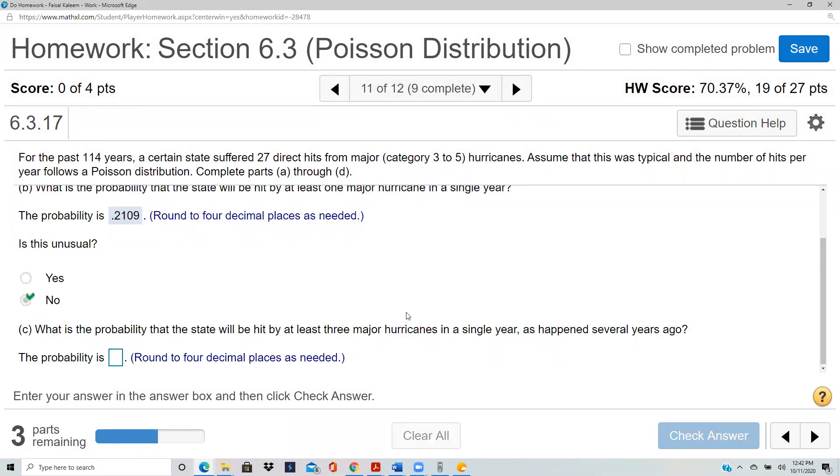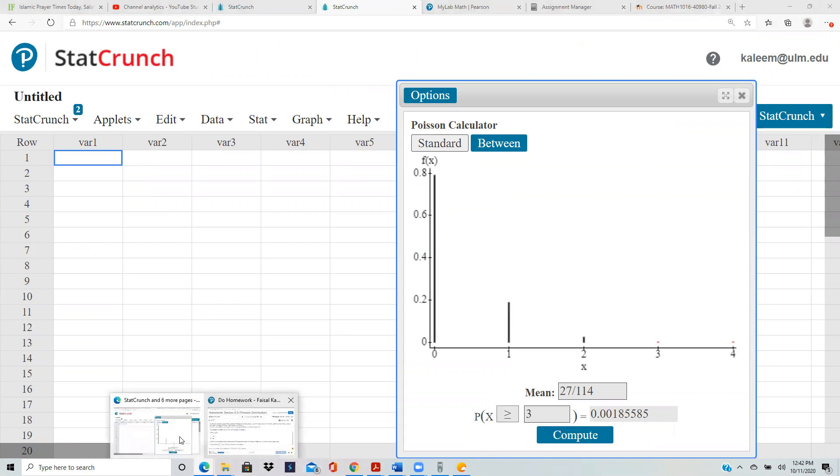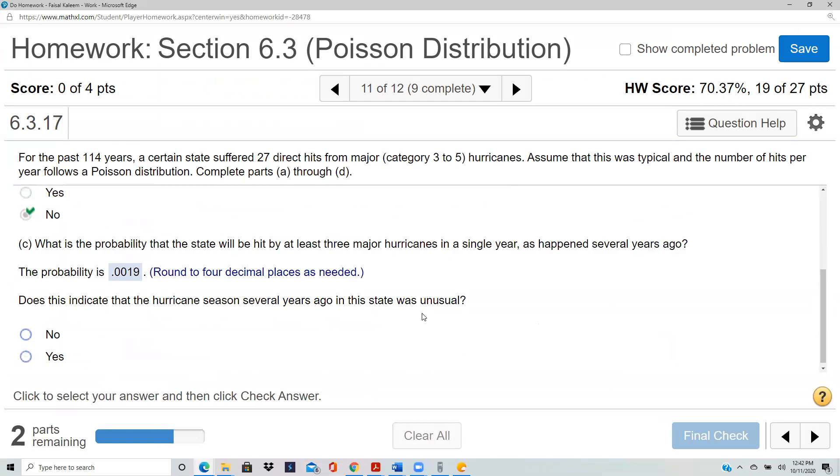What's the probability be hit by at least three major hurricanes? So greater than or equal to three for the x. At least three means greater than or equal to three. 0.019. And is this unusual? That is just 1.9%, so that is less than 5%, so yes that is unusual.